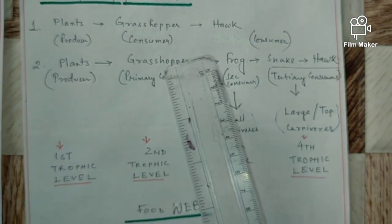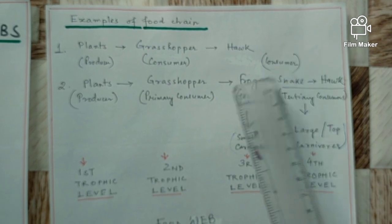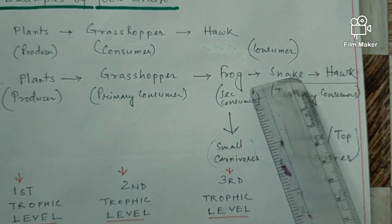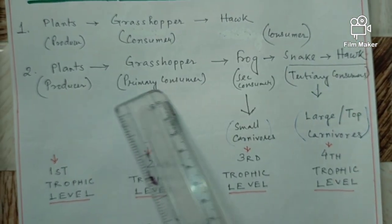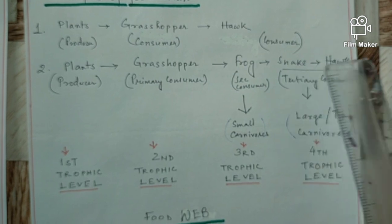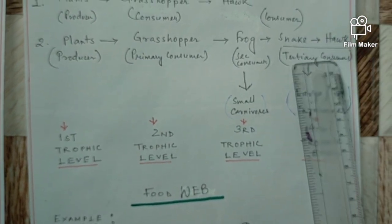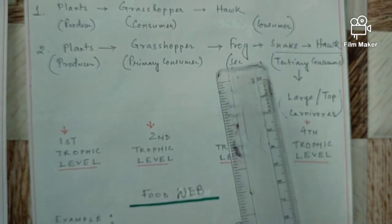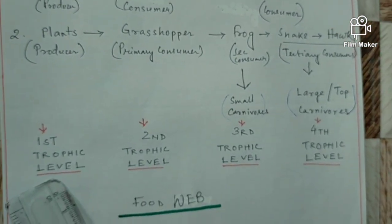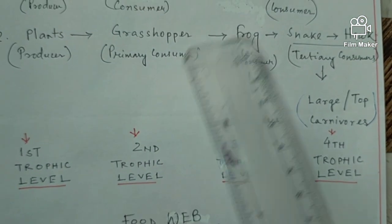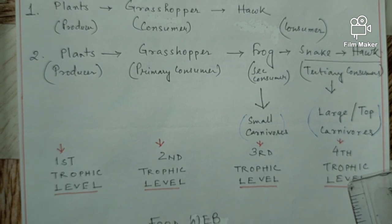Let us take the second food chain example. Plants are eaten by grasshopper, which is eaten by frog. Frog in turn is eaten by snake, and snake is eaten by hawk. So hawk occupies the topmost level in this food chain, and we can see that there are five levels. Each level is known as a trophic level. The biotic level in a food chain is termed as a trophic level. Plants form the first trophic level, grasshopper the second, frog the third, and snake and hawk form the fourth trophic level.